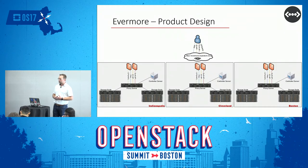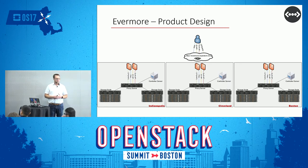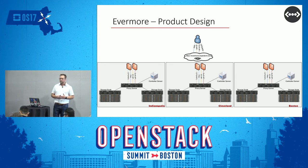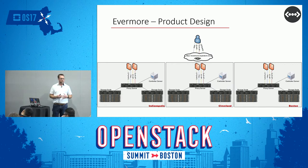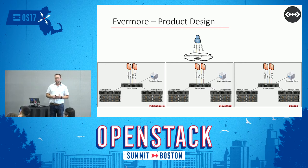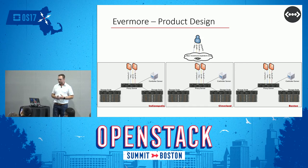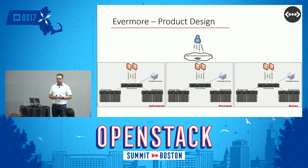Here's what the architecture looks like. These are built out in three different markets — Indianapolis, Cleveland, and Boston. Users can come through multiple protocols: S3, Swift, website file storage, and CIFS/NFS — all hitting evermore.expedient.com, which is globally server load balanced across those three markets. When you do a PUT, the data lands in one of those three sites, and then the whole file replicates across that 10 gig ring to the other sites.